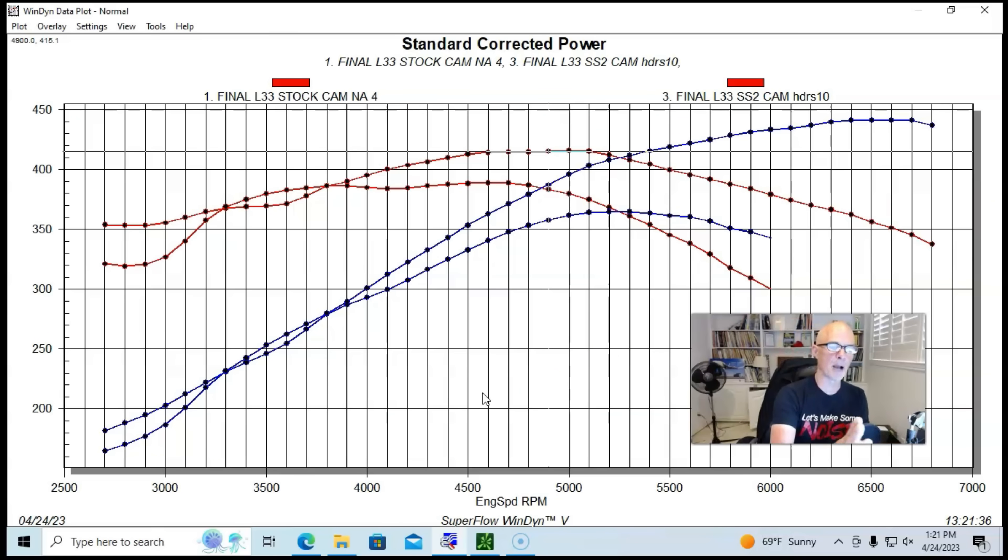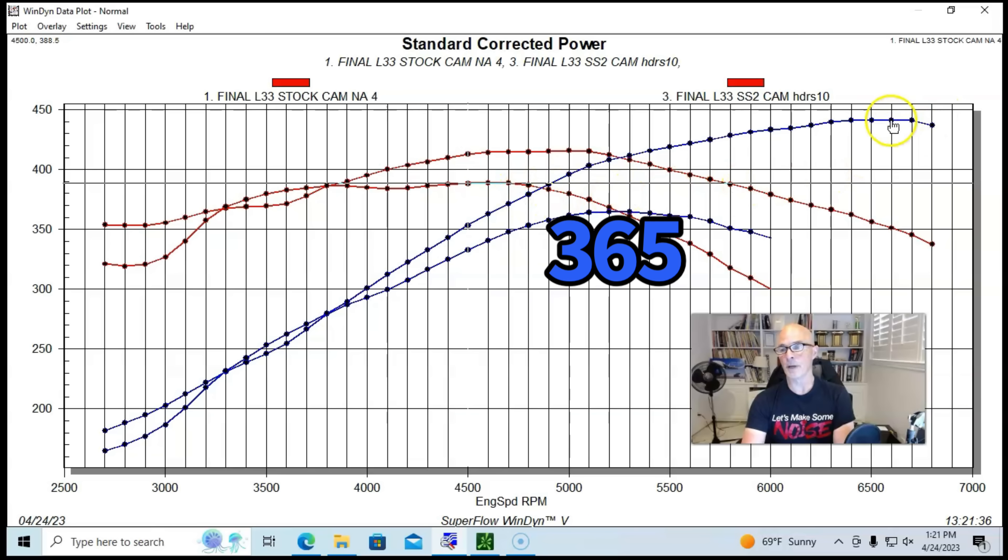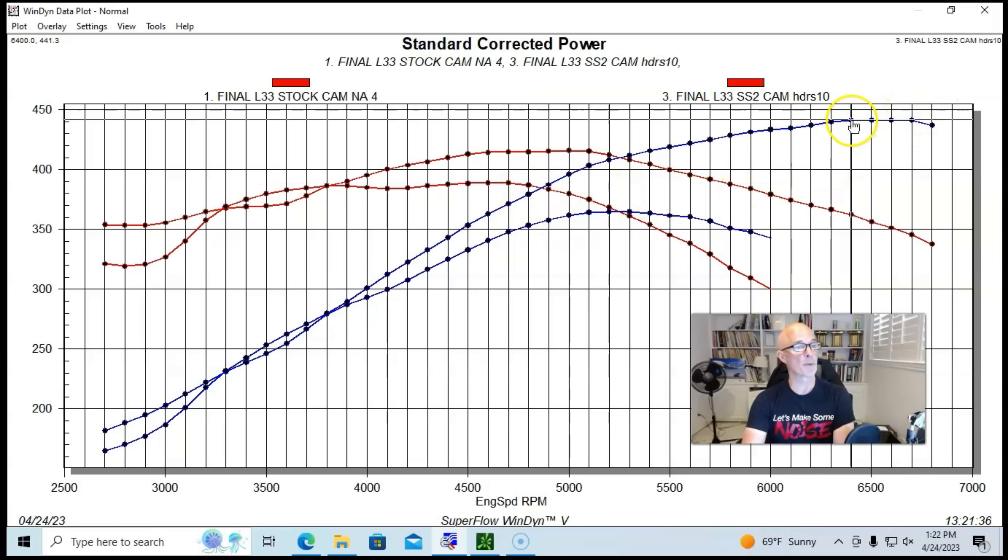It did seem to lose more power down low, but that video is already up. We can talk about the discussion later on. Right now, we're just looking at the power peaks. And so with the Sloppy Stage 2, our peak power jumped from 365 horsepower and 389 foot-pounds of torque. With the Sloppy Stage 2, it made 441 horsepower, and then peak torque checked in at 416 foot-pounds of torque.